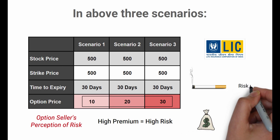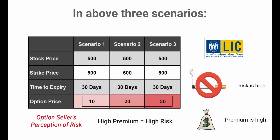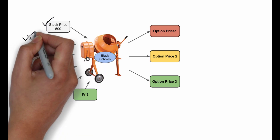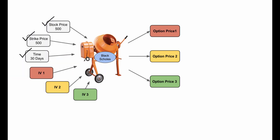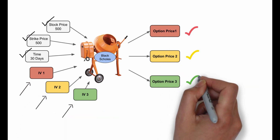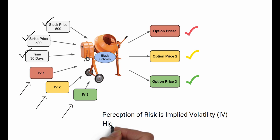Think of it like this: insurance companies charge a higher premium for smokers than for non-smokers of the same age, because the chance of a smoker falling sick is higher. In the Black-Scholes formula, if you put the same strike price, stock price, and time but use three different IVs, you will get three different option prices.